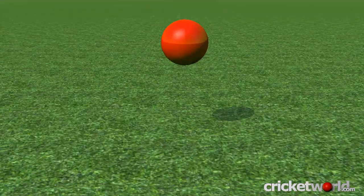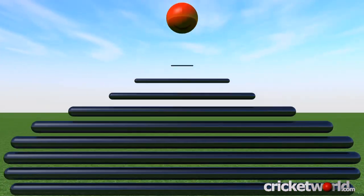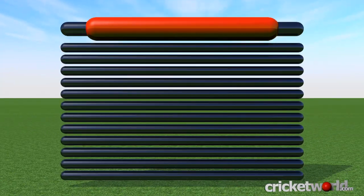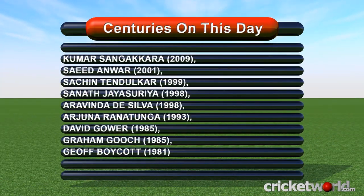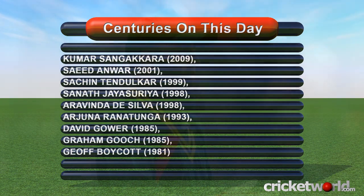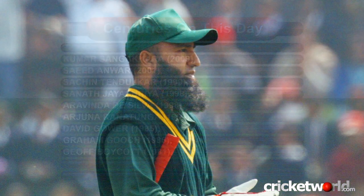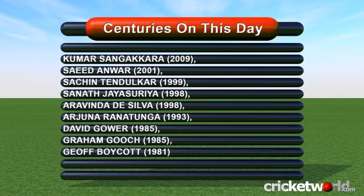Moving on to centuries: in the very same game, Saeed Anwar scored 101. Pakistan racked up a huge score in reply, with 5 players managing to score centuries.